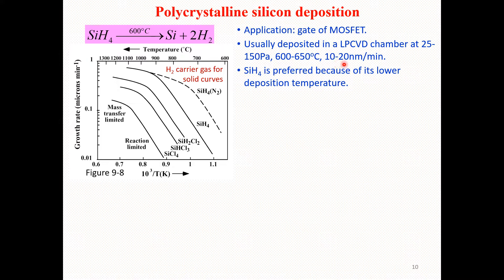The deposition rates in this technique should be in the range of 10 to 25 nanometers per minute. Silicon tetrahydride is preferred because of its lower deposition temperature — around 600 degrees centigrade — which is why silicon tetrahydride is preferred for this process.